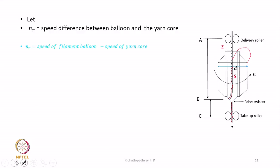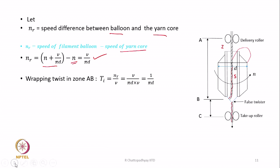Let NR be the speed difference between the balloon and the yarn core. NR is going to be the speed of the filament balloon minus the speed of the yarn core, which is N. So that is V divided by πD, as already mentioned. N and N will cancel and we will be left with V by πD. So the wrapping twist in zone AB is going to be NR by V, and NR is V by πD, giving us 1 upon πD.